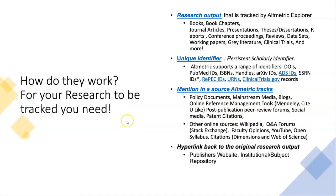So how do they work? For your research to be tracked, you need research output that's tracked by Altmetric Explorer — so it could be books, book chapters, journal articles, presentations, and so on. It also needs to have a unique identifier, a persistent scholarly identifier. For example, a DOI — the digital object identifier — which you'll find on most publications, needs to be included. So if you're sharing it on Twitter, you'd need to include that so it'll link to your article.